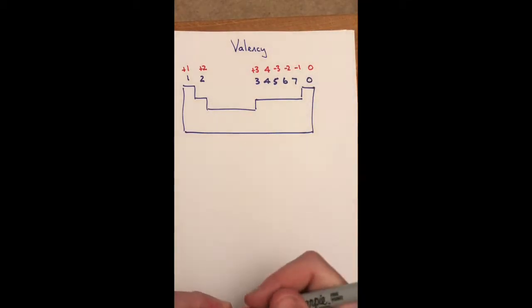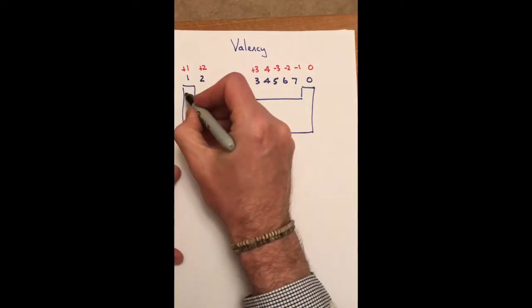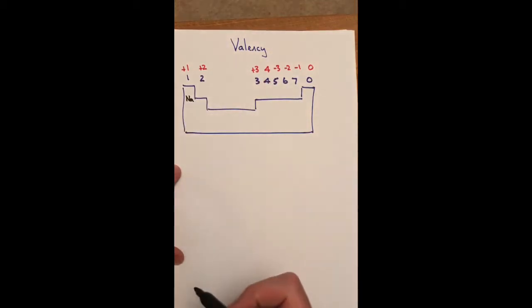And those numbers at the top that I've put in red now, they are the charges on the ions that form in those tables. So if you look at this group here, to give you an example, in this group, this is group one, we have sodium.